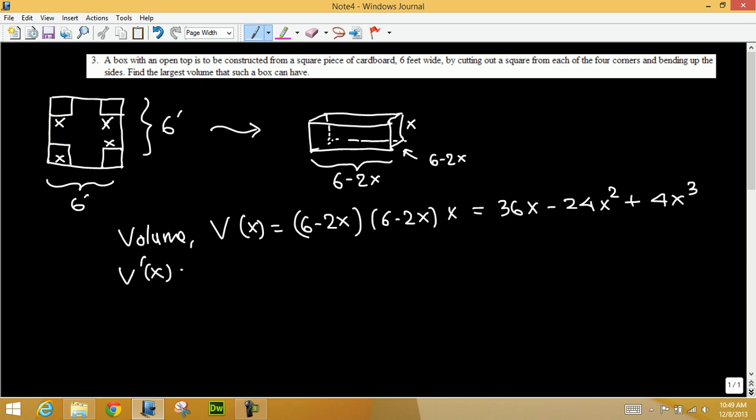We take the derivative. The derivative is 36 minus 48X plus 12X squared, and we set this equals zero and solve for X. So we have a trinomial. Looks like twelve will divide all three numbers.